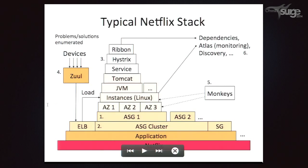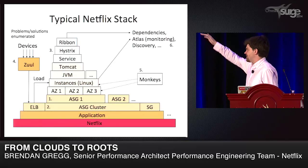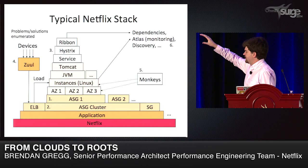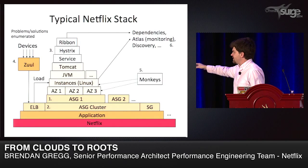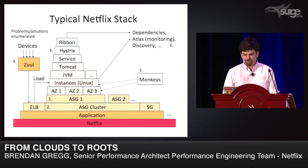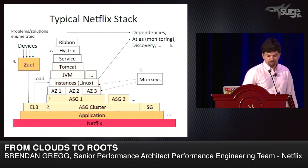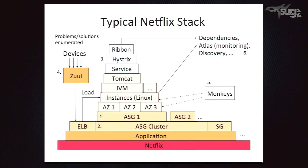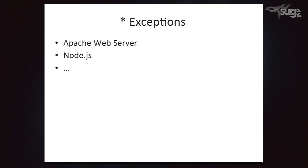To give you an idea of how all those different problems and solutions fit together, I've drawn a picture of a typical Netflix stack. Applications run in ASG clusters, usually two ASGs on top of each other across three availability zones for redundancy. Some service teams run Apache Web Server and one is running Node.js.